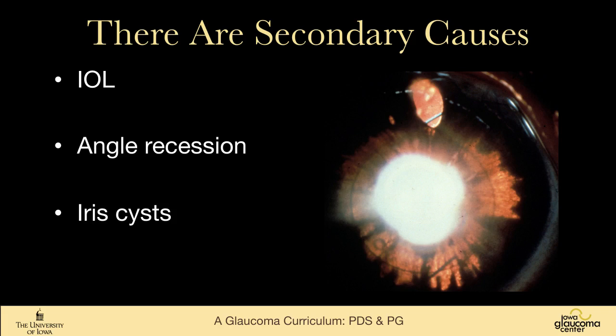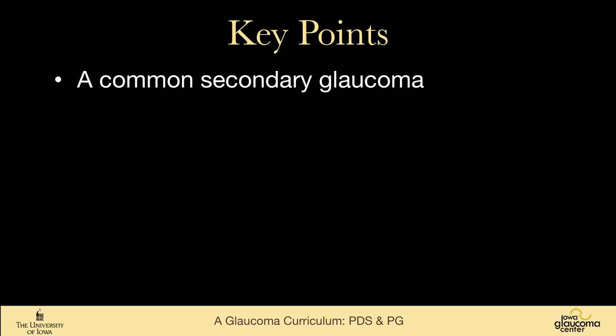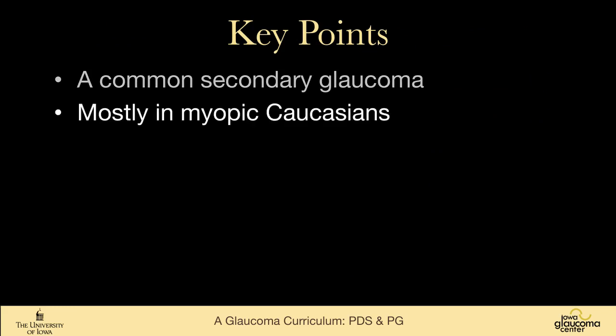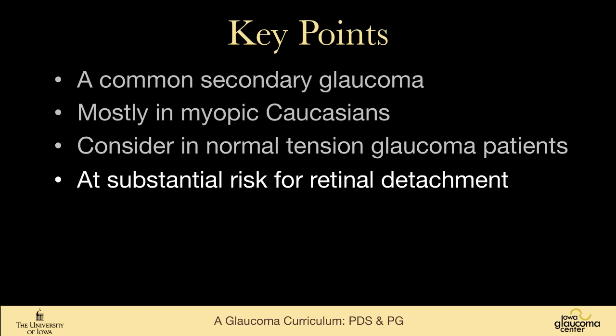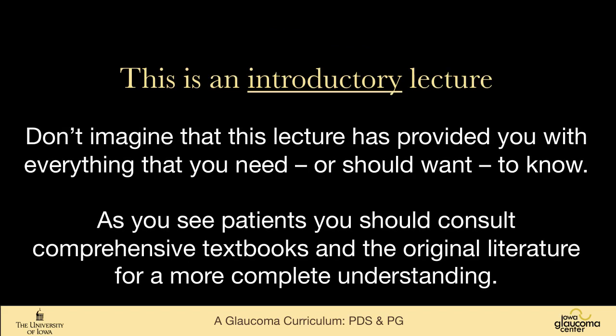There are some secondary causes of pigment dispersion: sulcus intraocular lenses can occasionally rub on the iris and release pigment; angle recession and iris cysts are other fairly uncommon causes. The key points are that this is a common secondary glaucoma, mostly seen in myopic Caucasians but everyone has some risk. Consider it in normal-tension glaucoma patients. These patients are at substantial risk for retinal detachment and must be warned. If you work in a population with a large Caucasian component, you will see a lot of pigment dispersion, and it's good to know how to think about and manage it.